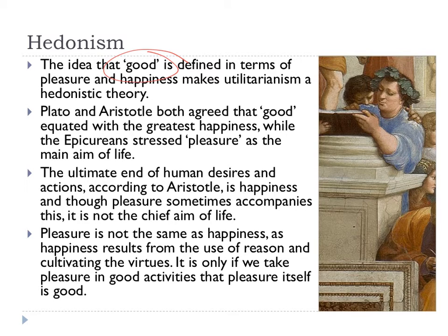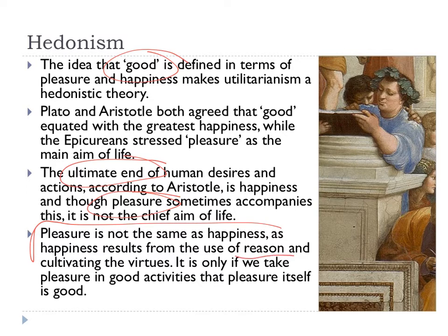The key for utilitarianism as a conception is that it's about the ends and about aiming for pleasure, and that there are differences between pleasure and happiness, although the difference is subtle. Pleasure is not the same as happiness. Happiness is a result from the use of reason, which is why we associate happiness with John Stuart Mill and we associate pleasure with Bentham.